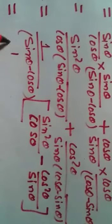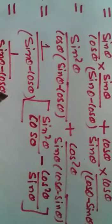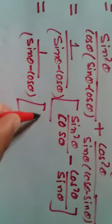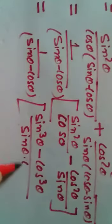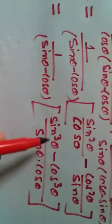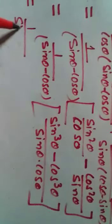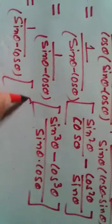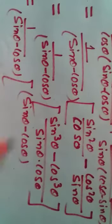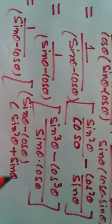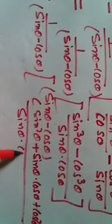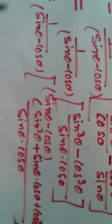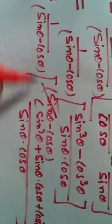Taking the LCM gives sin³θ minus cos³θ. We apply the a³ minus b³ formula: a³ minus b³ equals (a minus b)(a² plus ab plus b²). So this becomes 1/(sin θ minus cos θ) multiplied by (sin θ minus cos θ)(sin²θ plus sin θ·cos θ plus cos²θ) divided by (sin θ minus cos θ). The (sin θ minus cos θ) terms cancel.